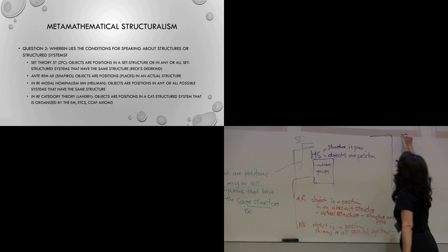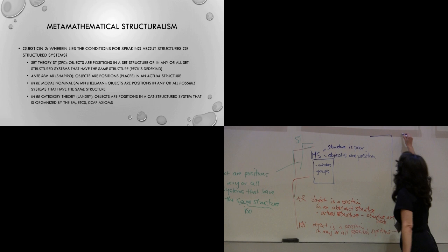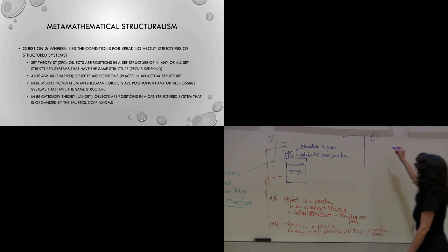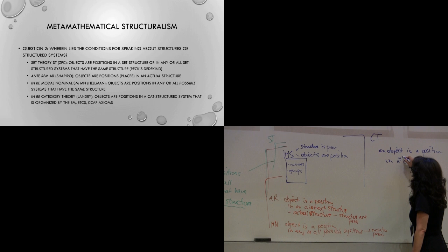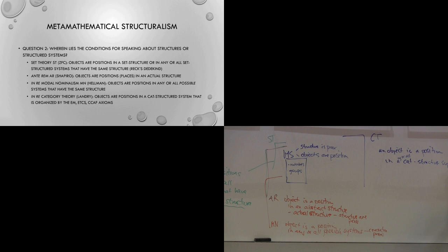Our next option — in blue — is to use category theory. And of course that's what I've argued: that an object is a position in a category-structured system, or in any or all category-structured systems.